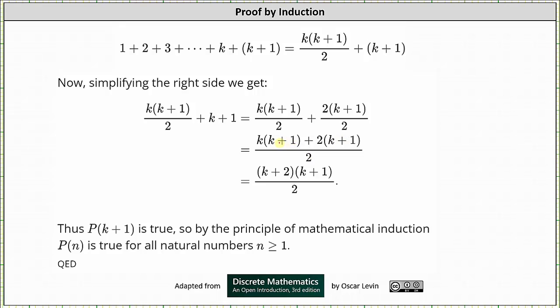Now looking at the two products in the numerator, notice how there's a common factor of k+1. If we factor out the k+1, we're left with the factor of k+2, which we can write as (k+2)(k+1)/2, which is what we needed to show to prove that P(k+1) is true.